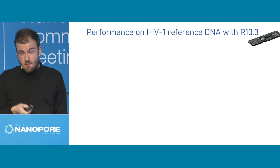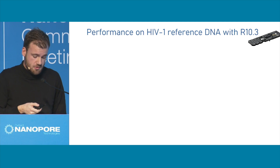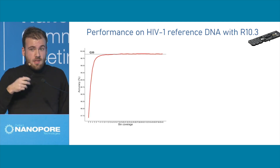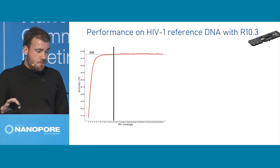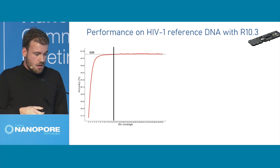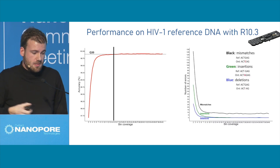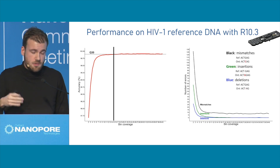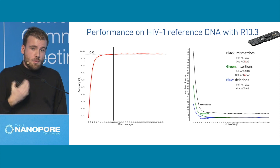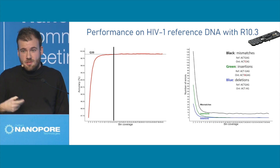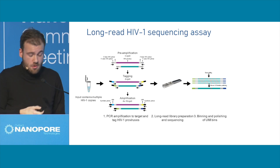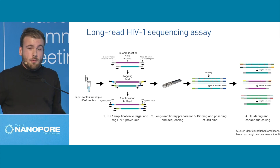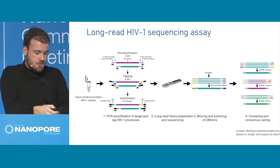For instance, this data was done with the old R10.3 flow cell. As you can see, with increasing coverage of reads in each bin, you can get up to Q30 accuracy with only 15 reads. What remains at that coverage are only mismatches — we resolve insertions and deletions. This is really needed if you want to assess whether the genome is intact or not, because one SNP can make a big difference. Because we do this pre-amplification step, we will have more HIV templates, and we can cluster different UMIs together into a mega-bin consensus.